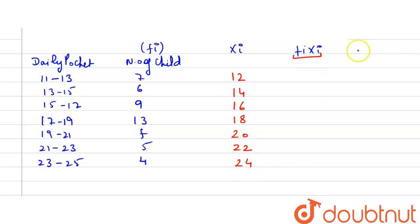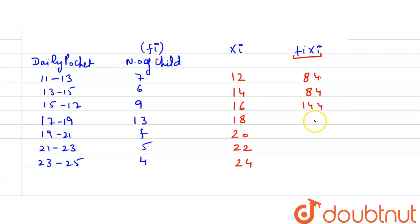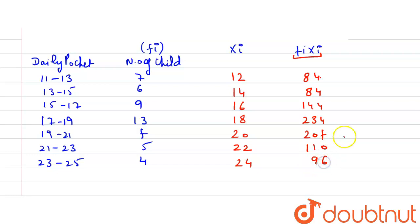23 plus 25 is 48, divided by 2 gives xi = 24. Now we multiply xi with fi to get fi·xi. So 12 multiplied by 7 is 84, and 6 multiplied by 14 is 84, and 9 multiplied by 16 is 144, and 18 multiplied by 13 is 234, and f multiplied by 20 is 20f, and 5 multiplied by 22 is 110, and 24 multiplied by 4 is 96.